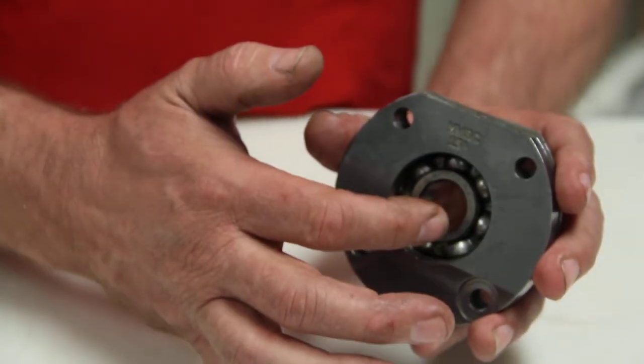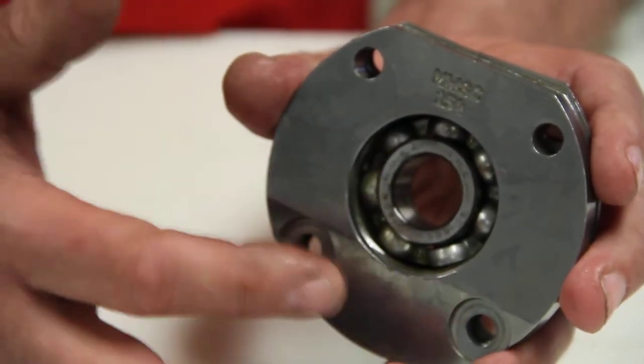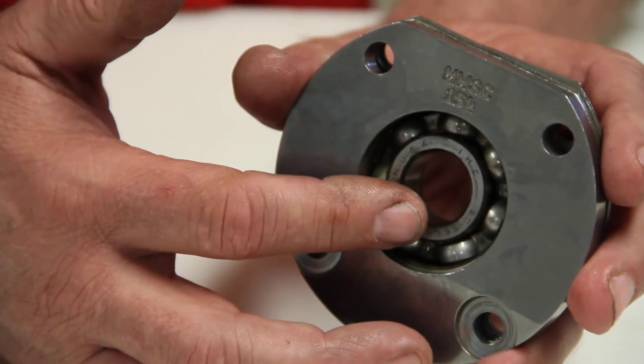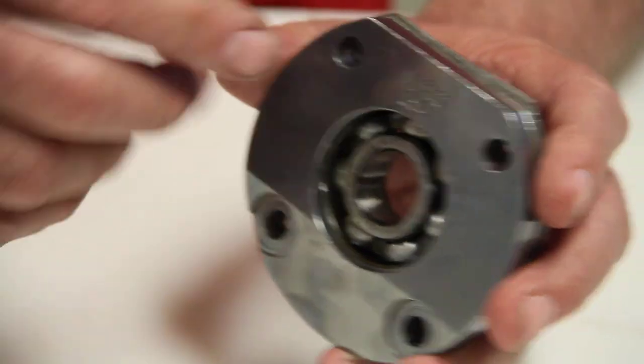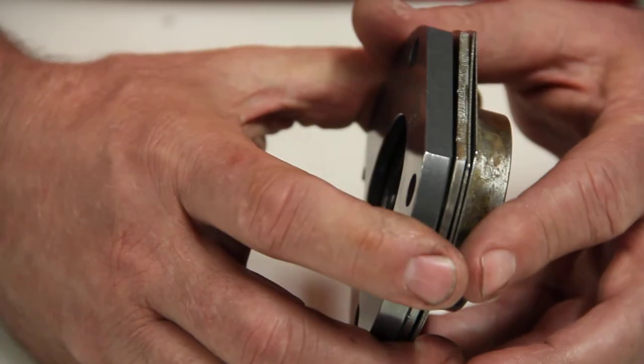On that front pinion nut, I always use a half-inch drive impact. Tighten that nut down as tight as you can get it, then put a little Loctite on it, and then stake that nut down so it doesn't back off. That's all there is to it.